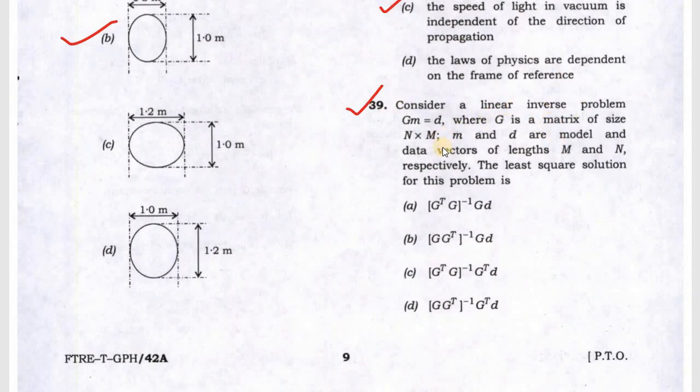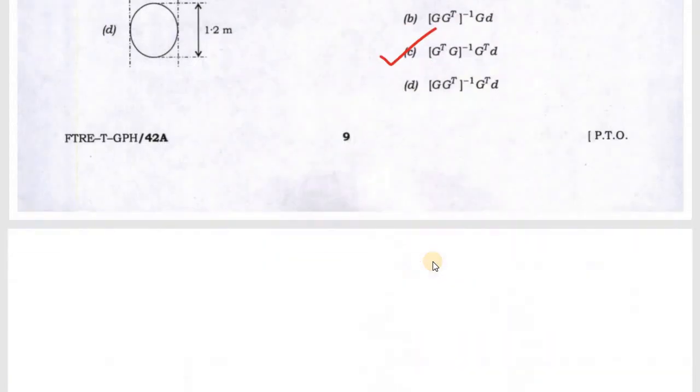Question 39: they are asking about a linear inversion problem. So Gm equal to d, and G is the matrix size and d is the data. The least square solution of this problem, so this is C will be the answer.